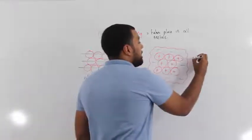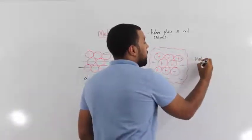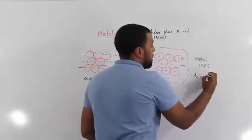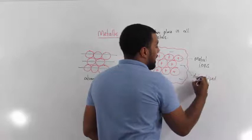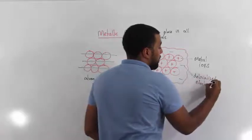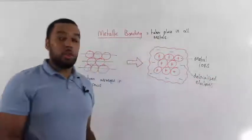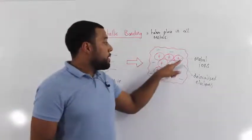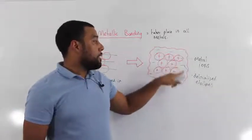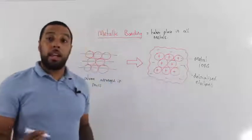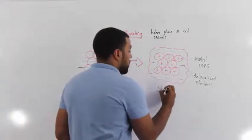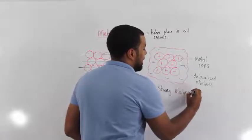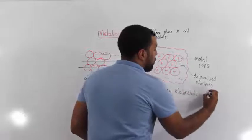So we now get these metal ions with the delocalized electrons free to roam around the metal. Now between these metal ions and these delocalized electrons, there is a strong electrostatic attraction.